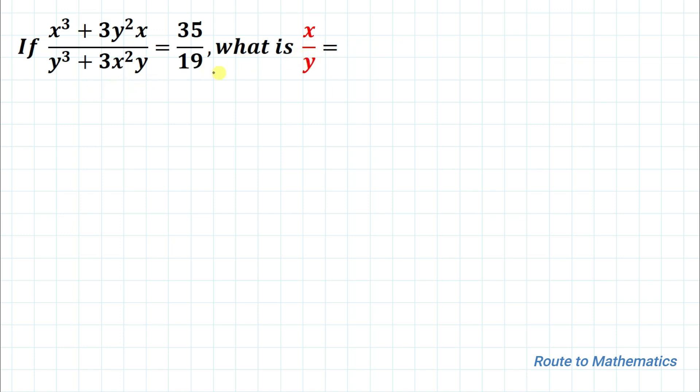So here we have given an equation from that we are asked to find the value of x/y. So without any delay, let's start the solution. The given equation is x³ + 3y²x divided by y³ + 3x²y equals 35/19.